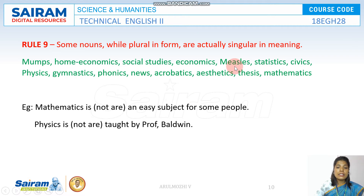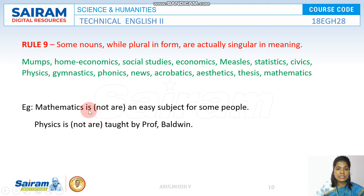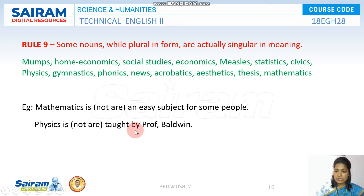These are examples that end with '-s', so you may consider them plural nouns, but they are not plural — they are all singular in nature. For example: 'Mathematics is an easy subject for some people.' 'Physics is taught by Professor Walshain.'